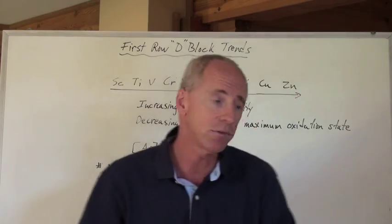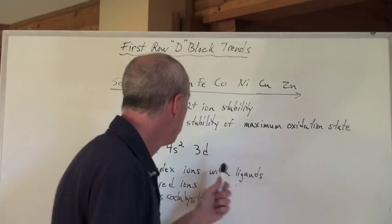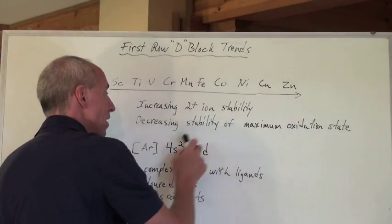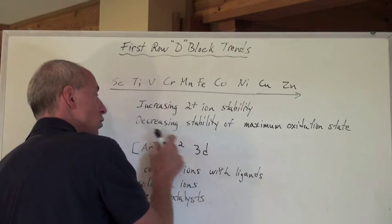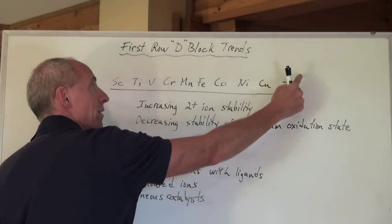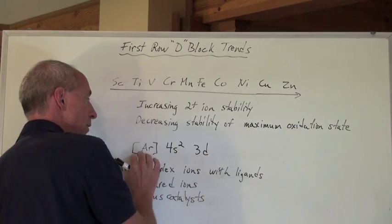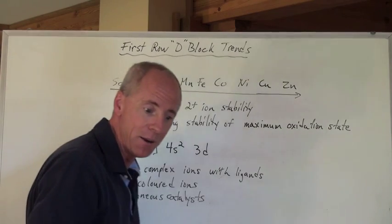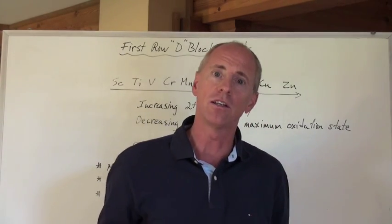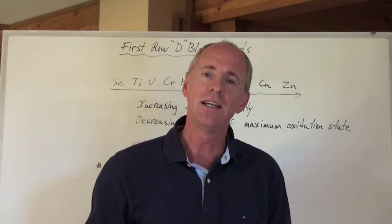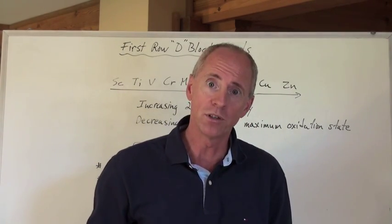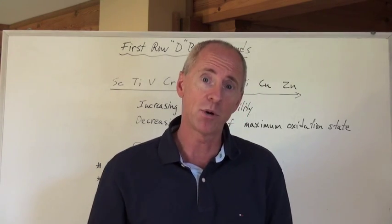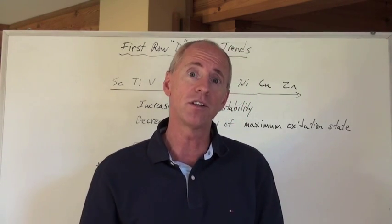So scandium wouldn't be a true transition element. And zinc of course would be argon, 3d10 — its 4s2 electrons are gone to make Zn2+. It has totally filled 3d orbitals, and therefore doesn't have the same type of properties that all the rest of the transition metals do.